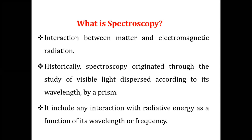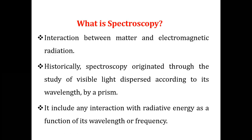What is spectroscopy? In recent times, we define spectroscopy as the interaction between matter and electromagnetic radiation. When we apply electromagnetic radiation to some matter and study that phenomenon, it is known as spectroscopy. In the past, when light passed through a prism and produced a spectrum, that was taken as spectroscopy. But now the actual meaning is the interaction between matter and electromagnetic radiation, including interaction with radiative energy as a function of its wavelength or frequency.